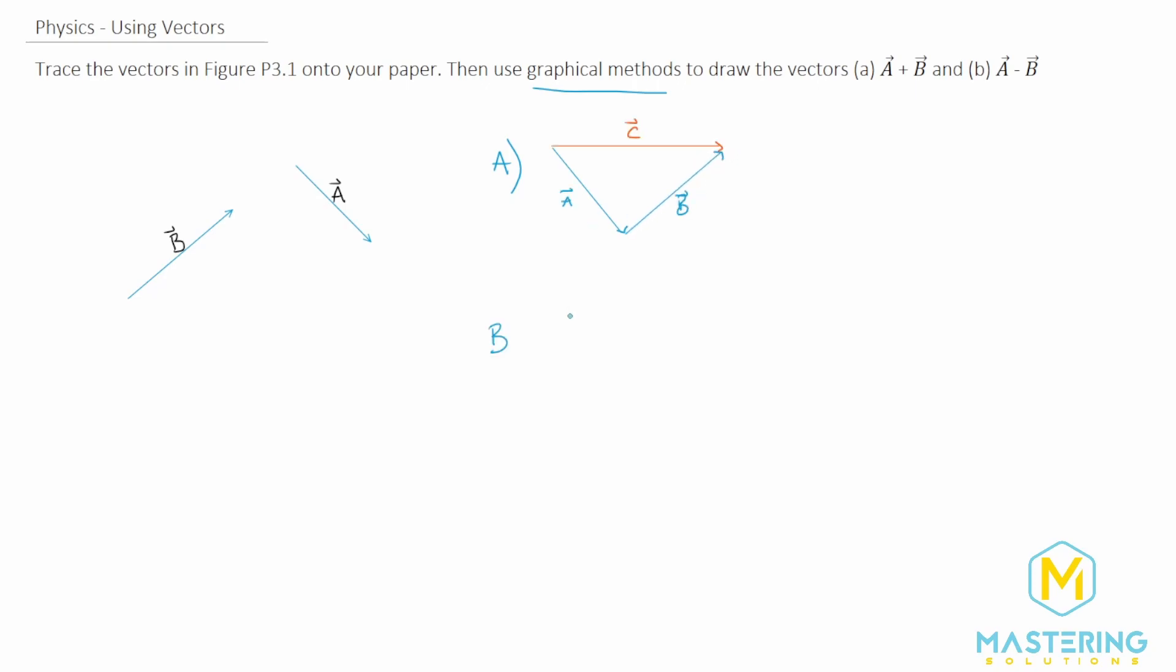And now for part B, what we're going to do is the same process, we have the tail to tip, except that we take the second one that we're subtracting and we flip it.